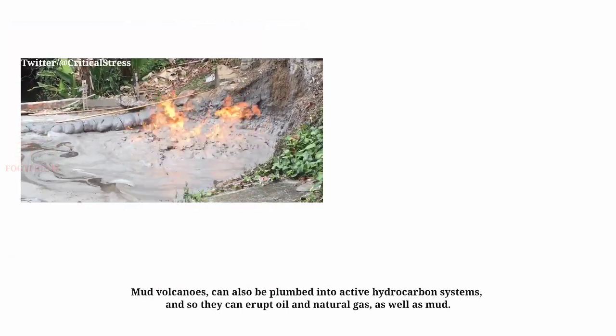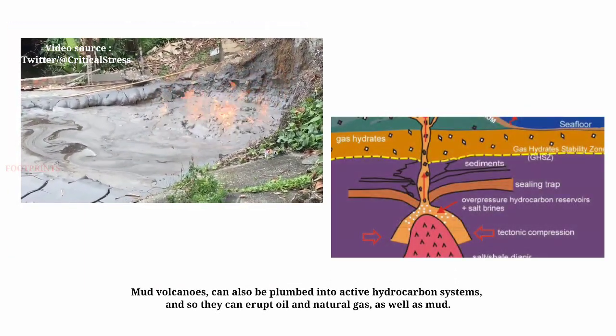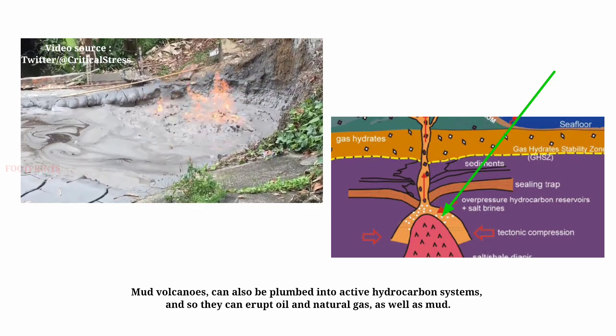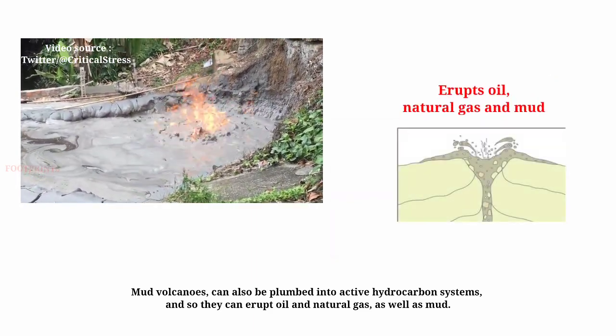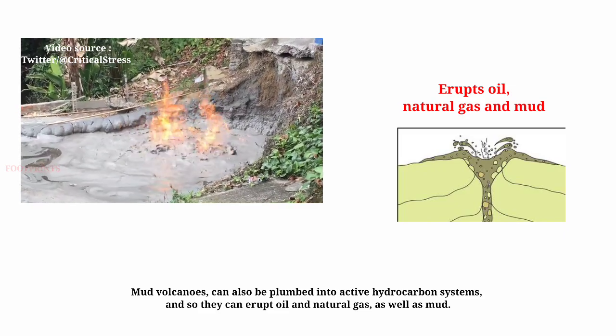Mud volcanoes can also be plumbed into active hydrocarbon systems, and so they can erupt oil and natural gas as well as mud.